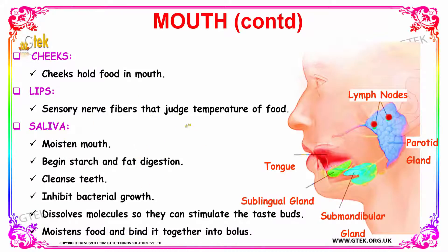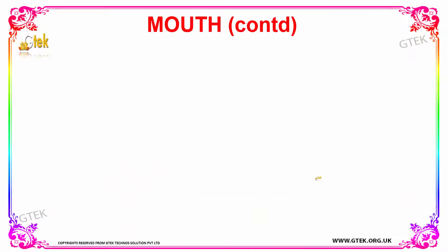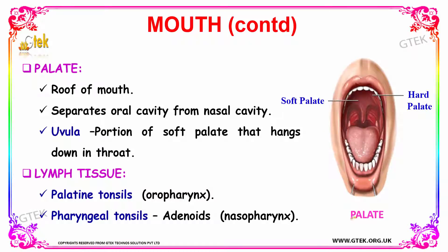So these are some of the major parts that help in digestion in your mouth. Next, we have the part known as the palate. The palate is nothing but the roof of your mouth. It separates the oral cavity from the nasal cavity. Your uvula is the portion of soft palate that hangs down into your throat, as pointed out here.